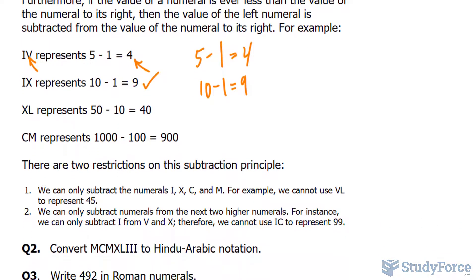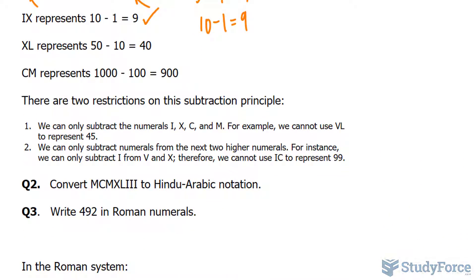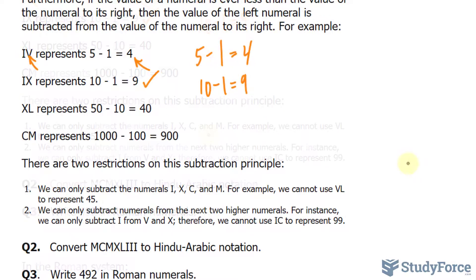There are some restrictions to this rule, however. We can only subtract the numerals I, X, C, and M. This does not apply for the other numerals. For example, we cannot use VL to represent 45.